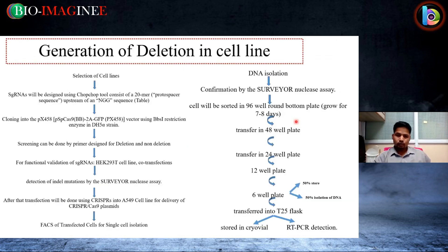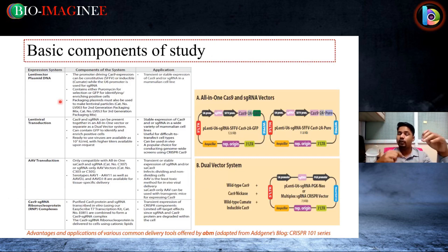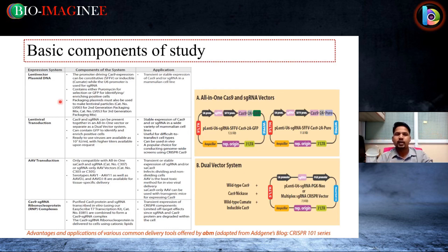The basic components of this study include different expression systems. Common transfection using liposome-mediated reagents like lipofectamine provides transient expression only. For stable expression — to generate stable cell lines — you need to rely on lentiviral vector or lentiviral packaging system. Lentiviral transduction system is helpful in that case.